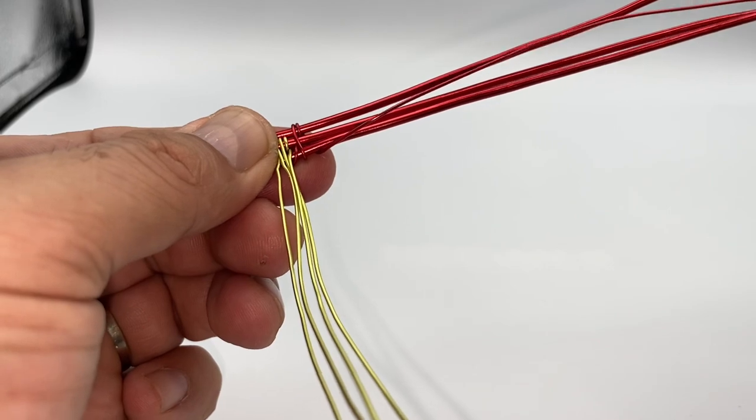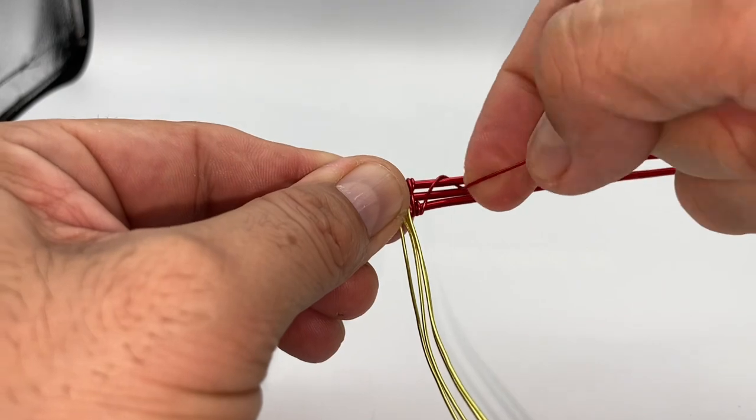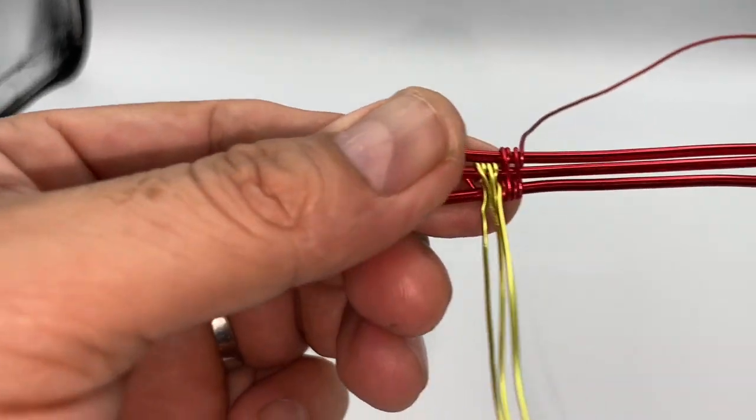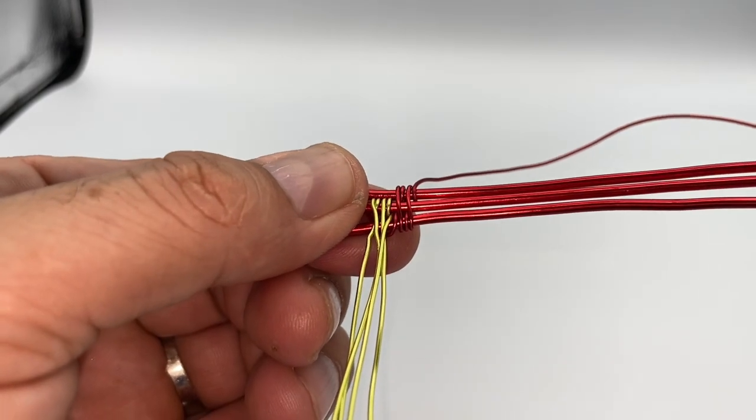So now I'm going to continue doing my weaving pattern by just wrapping the two wires on the edges. I'm going to skip the middle one. There you go, this is what it's supposed to look like.